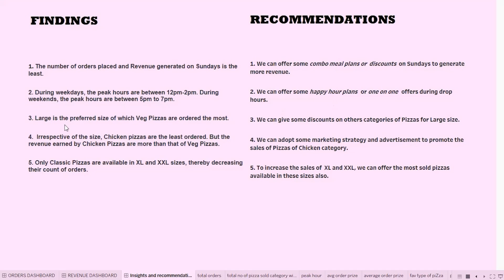Number 3: large is the preferred size, of which veggie pizzas are the most ordered, so we can give some discounts on other categories of large-size pizzas. Number 4: irrespective of size, chicken pizzas are the least ordered; however, the revenue earned by chicken pizzas is more than that of veggie pizzas, so we can adopt marketing strategies and advertisements to promote the chicken category.